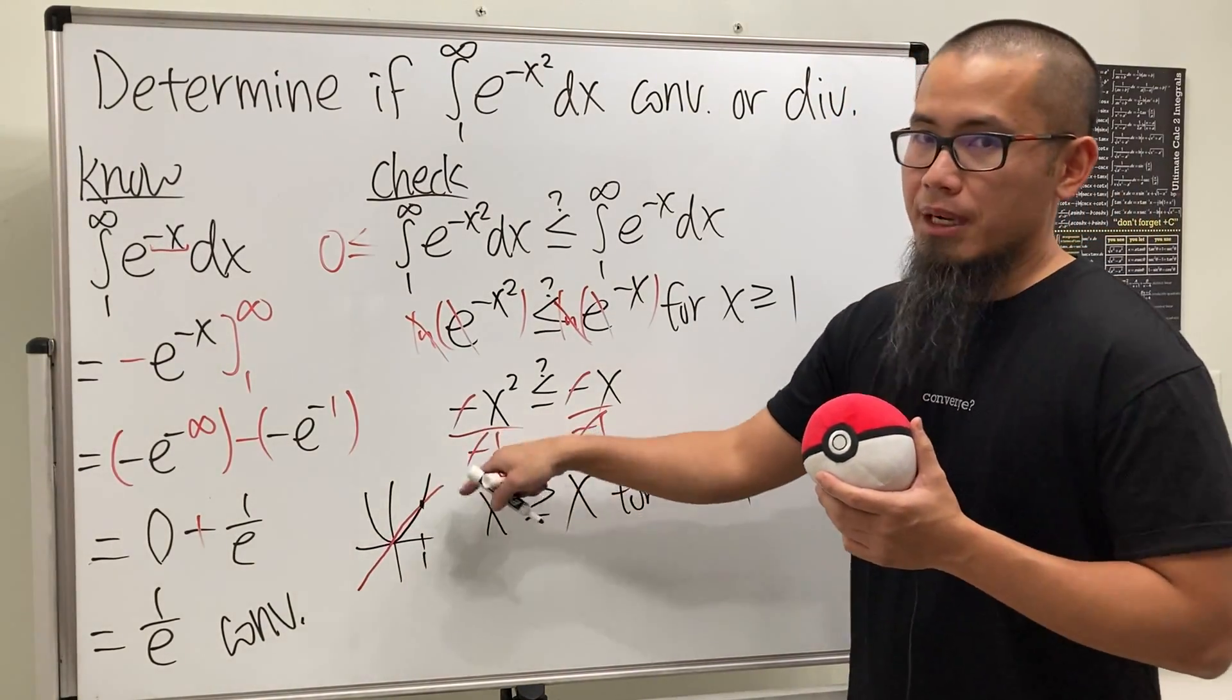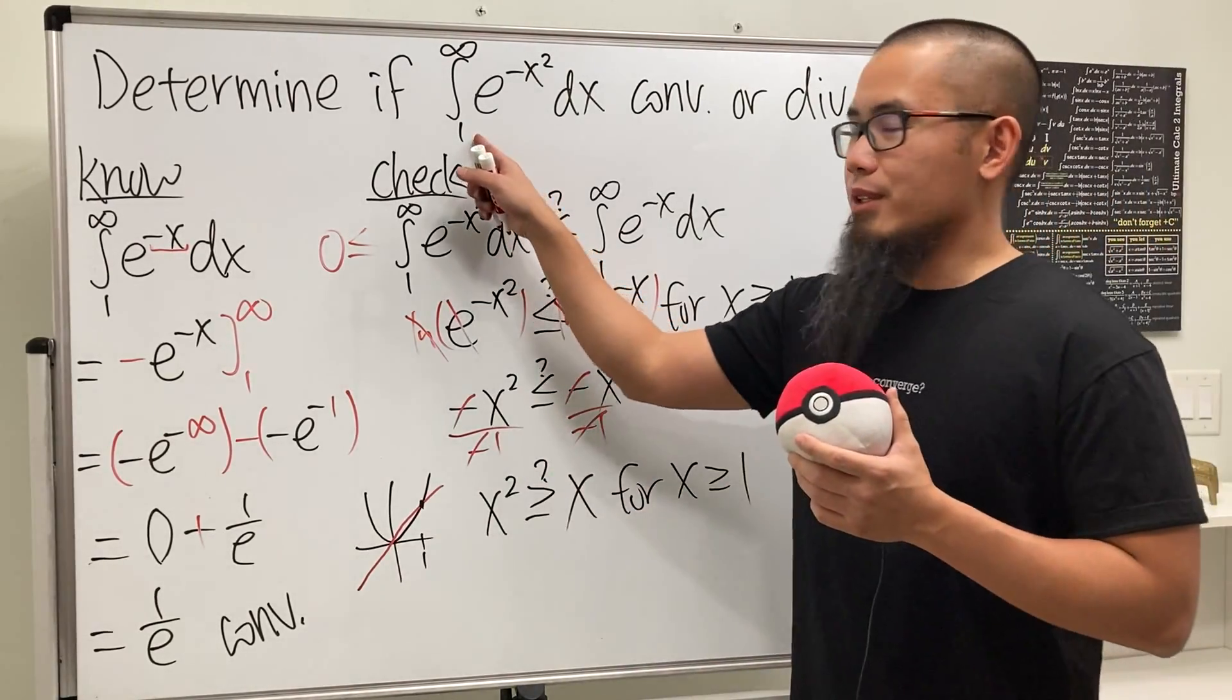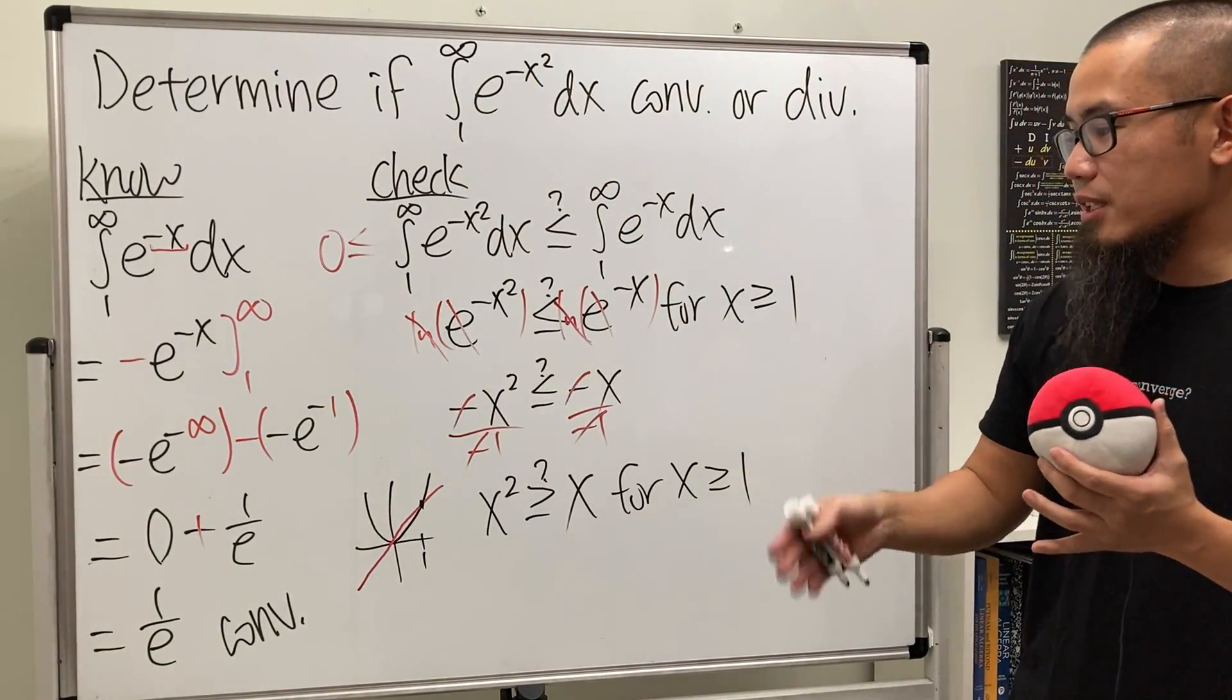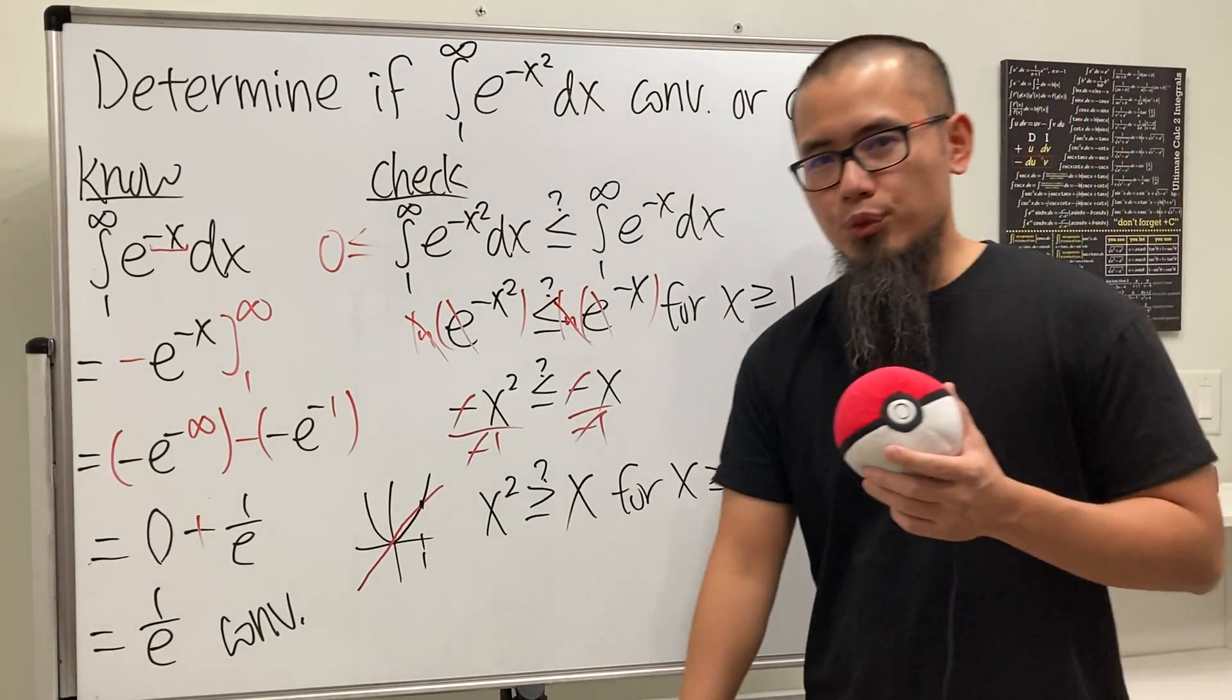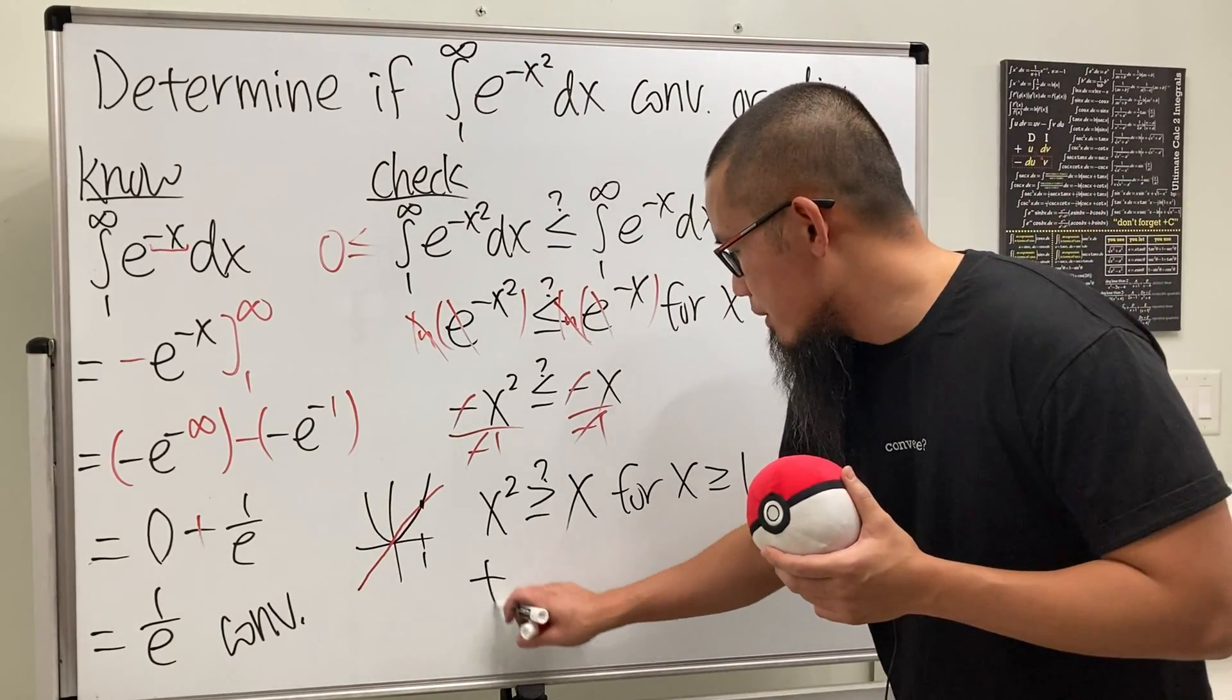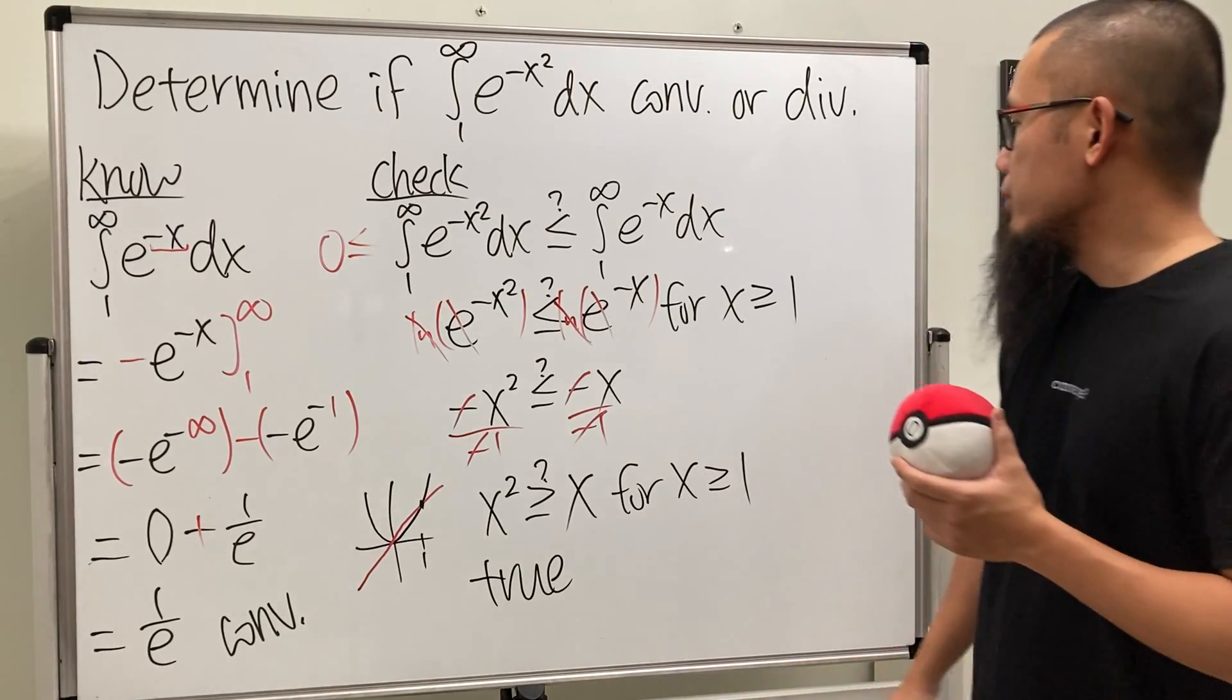And this is one of the reasons why I chose to do just the integral going from 1 to infinity to reduce unnecessary confusion, especially if this is our first time of doing the comparison test. But anyway, this right here is true. You can use the graph to argue that, or you can just do more algebra, up to you.